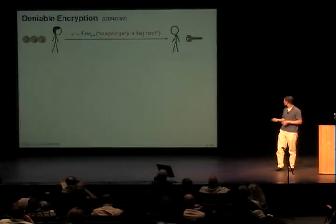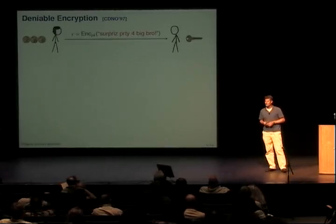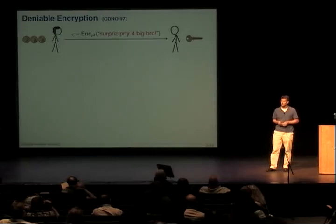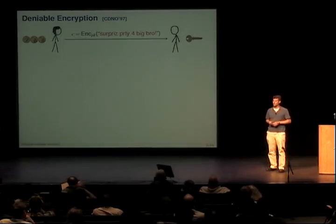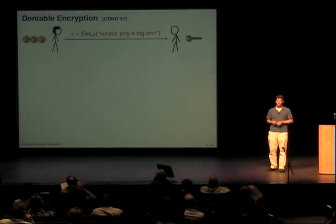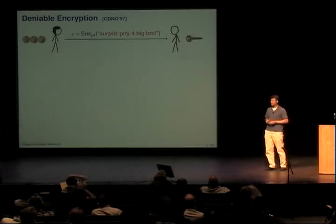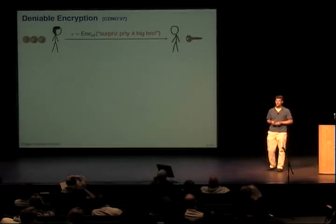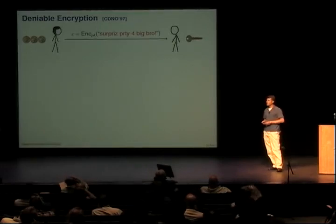So many talks start with a story, and this one is no different. Today's story: Alice and Bob are siblings, and one of them is away at school. They want to plan a party for their big brother for when Alice comes home. They're using public key encryption to keep their messages safe because the big brother is watching them. So Alice encrypts a message saying, 'let's have a surprise party for big brother,' and big brother sees the traffic go by but it's encrypted, so he can't tell what the message is.